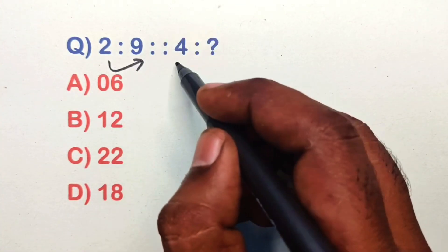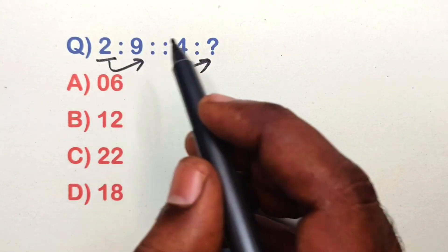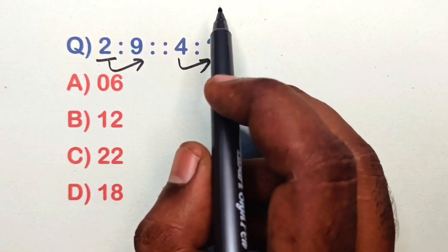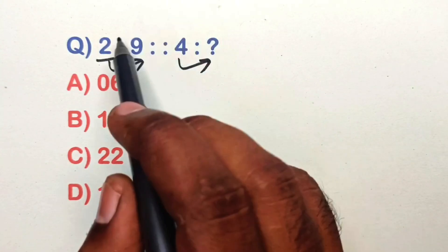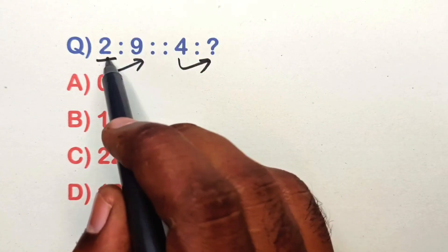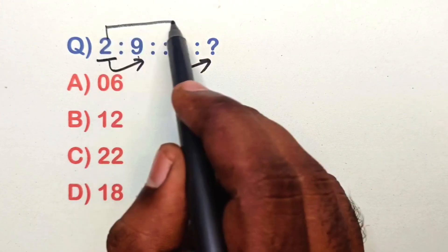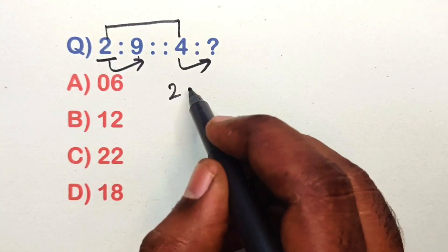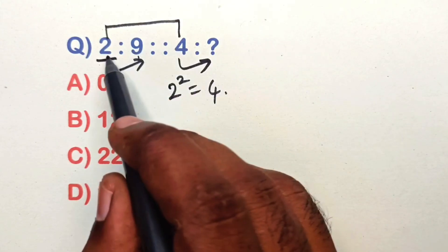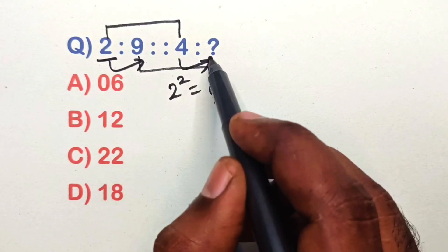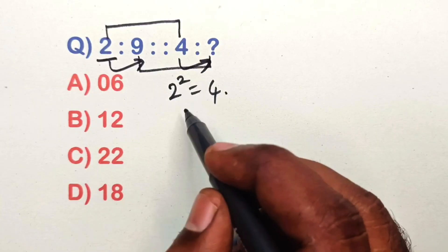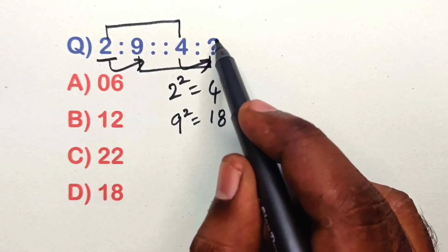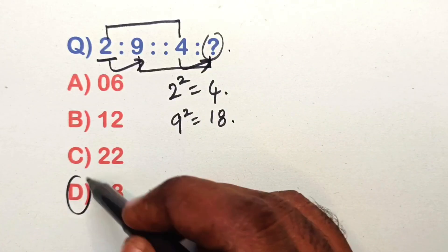Find the relation in this analogy equation. The relation is between 2 and 4: 2 squared is 4. Same way, take 9: 9 squared is 18, so answer is option D.